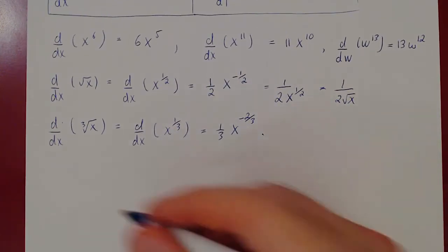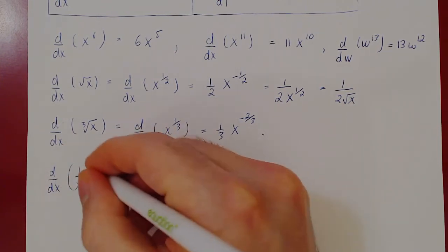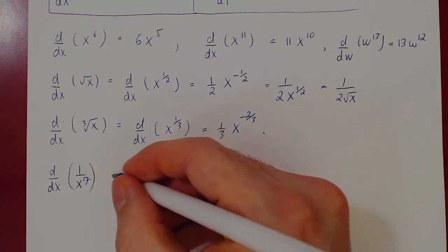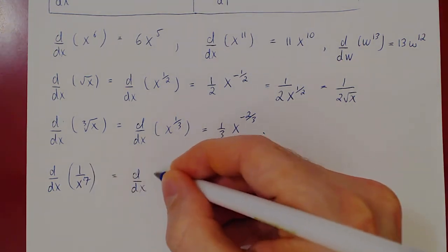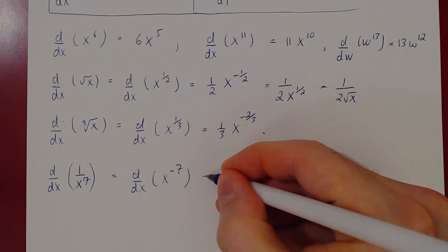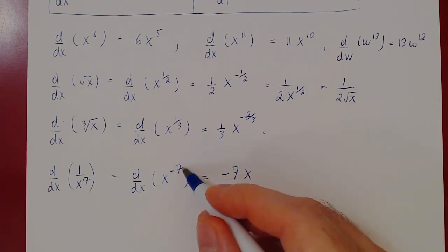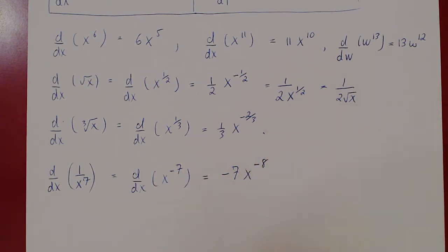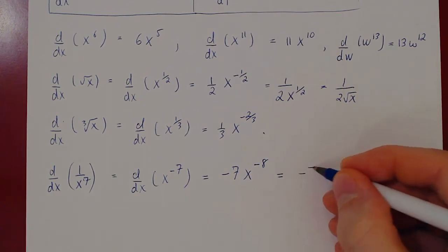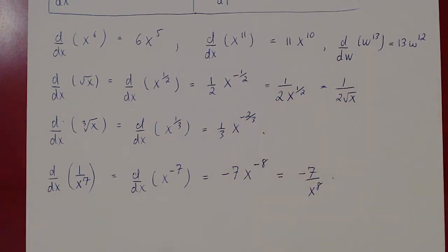What if we have a fraction — the derivative of 1 over x to the 7? This is not directly x to a power, but if we bring x back up, it becomes the derivative of x to the negative 7. Now apply the power rule: bring the exponent negative 7 down — negative 7 times x to the negative 7 minus 1, which is negative 8. You can leave it as −7x to the −8, or write it as −7 over x to the 8 using positive exponents.